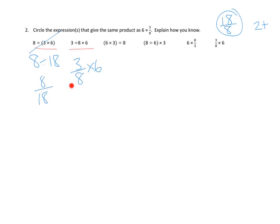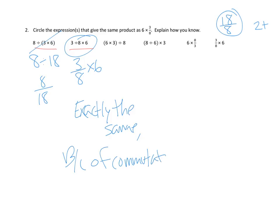In fact, all we've done here is switch the order. And we can do that in multiplication because multiplication is commutative. So I think we're going to circle this. We're going to say that this is exactly the same because of commutative property.